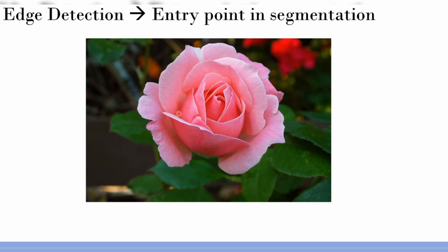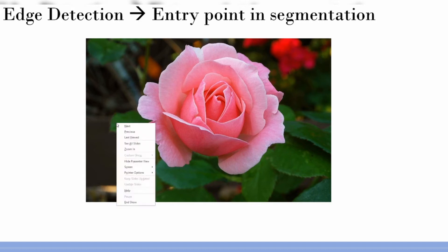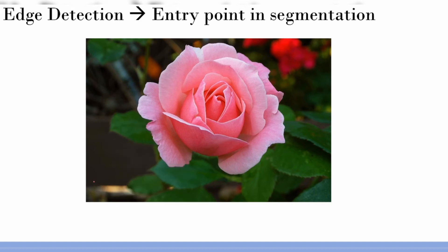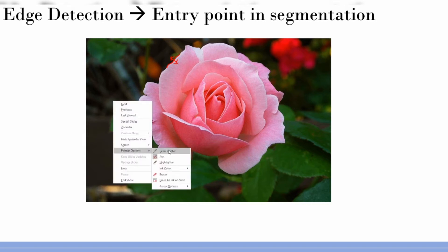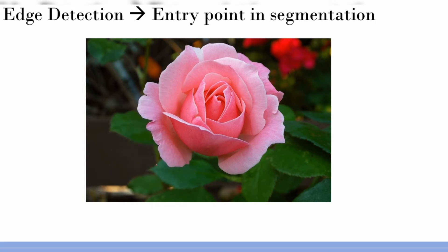One important characteristic you can readily see is the boundary of this flower, which is very evident. If you see this region, there is a sudden jump. If I find out the edges and see which are mostly continuous or dominant, you are basically finding out the border between the foreground and the background. That really is the motivation in many cases to first determine edges and then do segmentation.